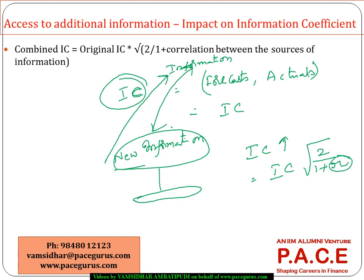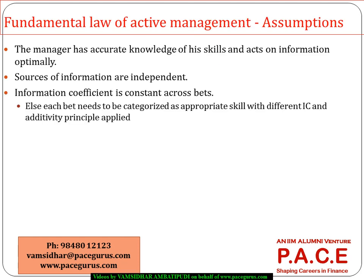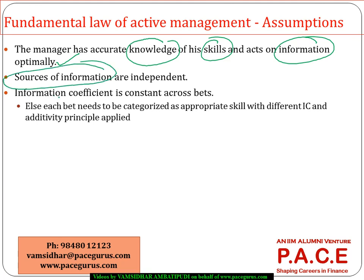The key assumptions of the fundamental law of active management are: first, the manager has good knowledge of his skills — he knows them with perfection and makes information decisions optimally. Second, all sources of information are independent; if dependency exists, correlations must be considered separately. Each forecast is based on a new and independent set of information — this is a prime assumption of the fundamental law.